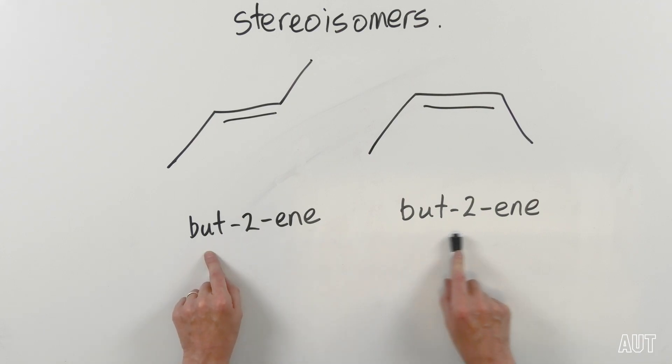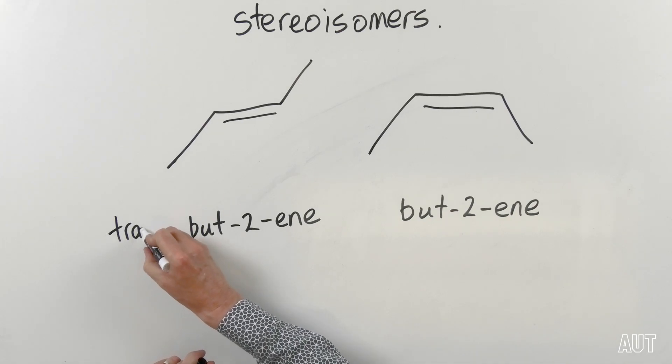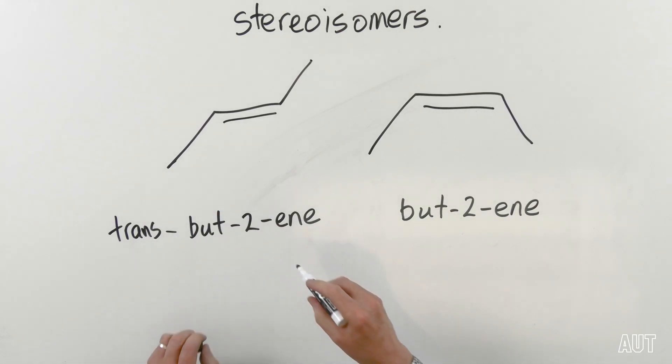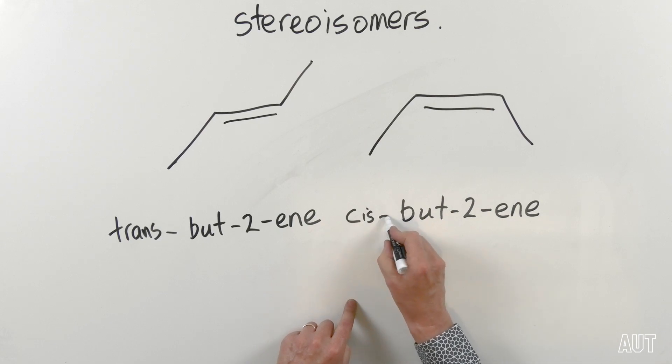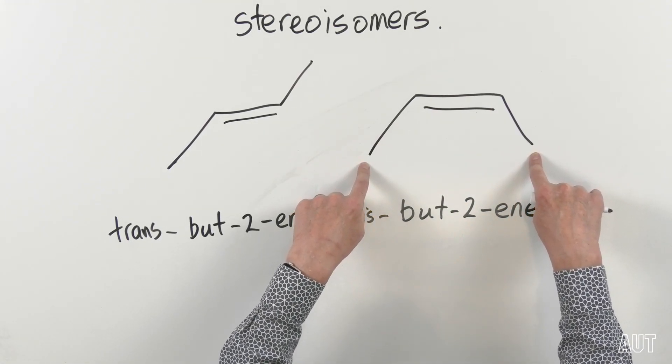So if we were to look at these two isomers of but-2-ene, we would call this trans-but-2-ene because the methyl groups are on opposite sides, and we would call this one cis-but-2-ene because the methyl groups are on the same side. These are examples of how you can have the same atom connectivity, the same order of attachment of atoms in your molecule, but still end up with different spatial arrangements of the atoms. That is one example of what we call stereoisomers.